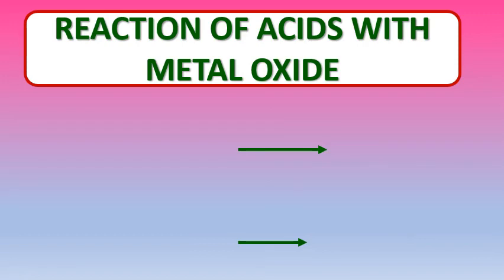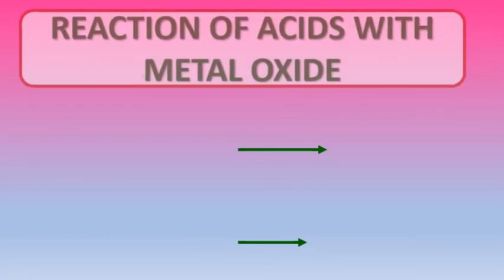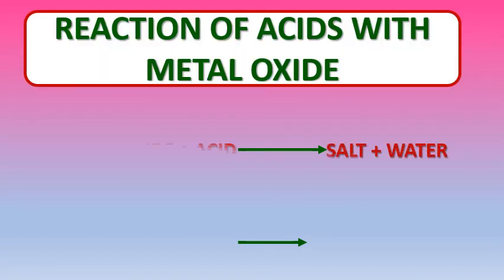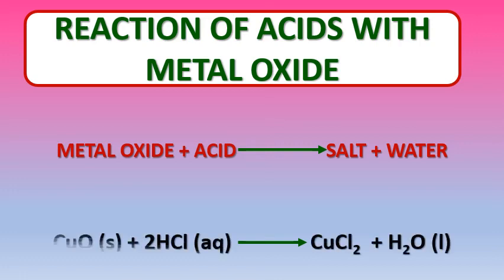Let's see how acids react with metal oxides. Acids react with metal oxides to form their respective salt and water. For example, if we take a small amount of black copper oxide in a beaker and add dilute hydrochloric acid slowly with stirring, we will see that the color of the solution becomes blue-green, which indicates the formation of the salt copper chloride.